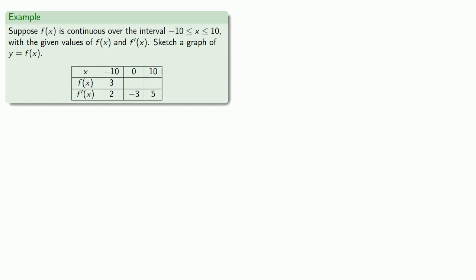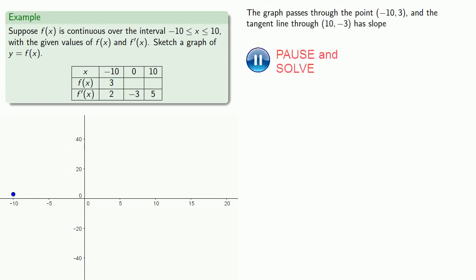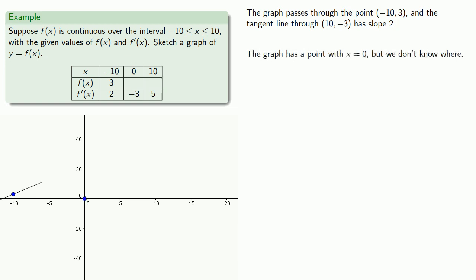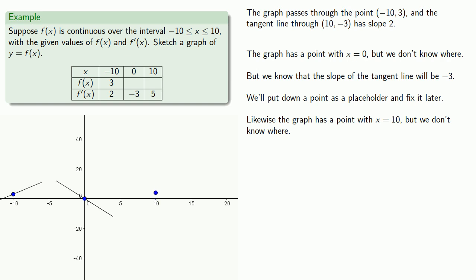What if we have different information? For example, suppose I have this information about the function and its derivatives. We might want to start with a point that the graph passes through, and we know what the tangent line through that point looks like. Now because the graph is continuous over the interval, we know that there has to be a point where x equals 0, but we don't know where — we don't have the f of x value, we don't have the y value. One of the nice things about mathematics is we can put something down and fix it later. So we'll put down a point as a placeholder, and we do know that our derivative is negative 3, so the slope of the tangent line will be negative 3. Likewise, we know that the graph has a point with x equal to 10, but we don't know where, though we do know the slope through this point will be 5. So we can put the tangent line and fix the location of the point later.